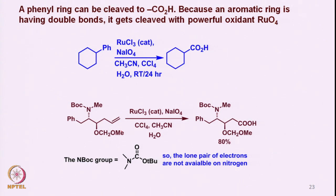Interestingly, a phenyl ring can also be cleaved to the corresponding acid, because an aromatic ring is essentially a system of multiple double bonds. Since ruthenium tetroxide is a very aggressive, powerful oxidant, even the phenyl ring gets oxidized to the corresponding acid. Such conversions of aromatic or electron-rich aromatic rings to the corresponding acids have been utilized in organic synthesis.